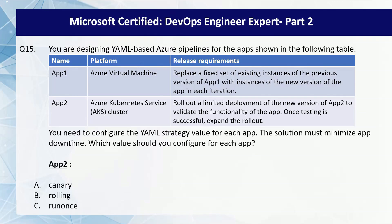For App2, you should use the canary deployment strategy. Canary deployment is an advanced deployment strategy that helps mitigate the risk involved in rolling out new versions of applications. By using this strategy, you can roll out changes to a small subset of servers first. As you gain more confidence in the new version, you can release it to more servers in your infrastructure and route more traffic to it.